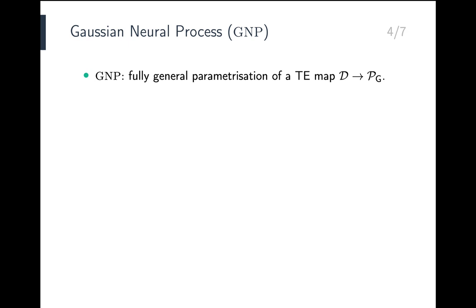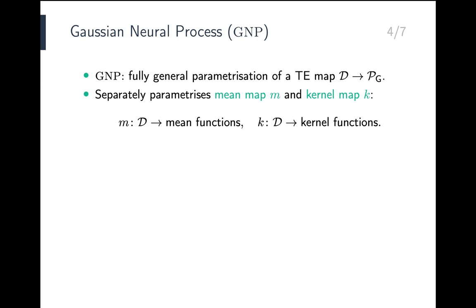The GNP is a fully general parametrization of a translation equivariant map from datasets to Gaussian processes. Using the property that Gaussian processes are characterized by their mean function and kernel function, the GNP separately parametrizes the mean map and kernel map. The mean map is translation equivariant and we use prior work to generally parametrize it. The kernel map is more involved because it satisfies a particular kind of translation equivariance — equivariant only with respect to diagonal translations. In the paper, we demonstrate how such a map can be generally parametrized.